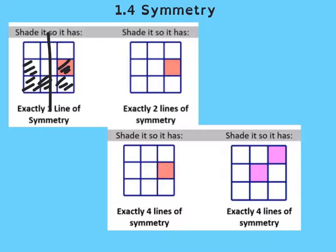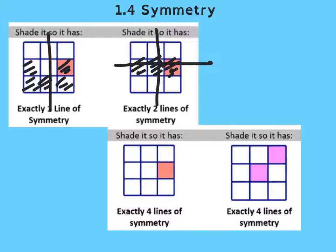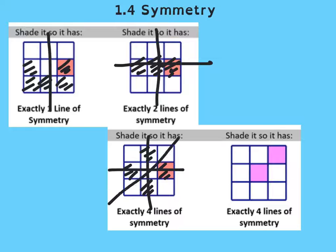How about exactly two lines? If I shaded this one and this one, I would have this line working and this line working, and that would be it — so that would work. How about four lines? I think if I shaded these ones, that would work for four. There are many other answers, but I'm just showing you the idea of shading.